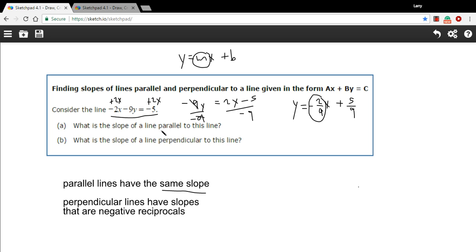So a slope to a line parallel to this line is going to be the same thing, negative 2 ninths. Now, a slope of a perpendicular line is going to be a negative reciprocal. So since this one is already negative, it's going to be a positive. The negative of a negative is a positive. And we're going to take the reciprocal, so we'll flip this fraction. So this is actually going to be a positive 9 halves.